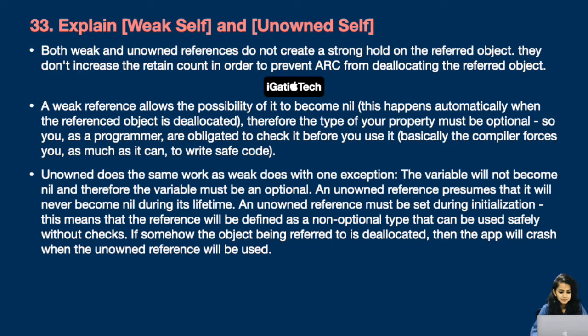Unowned does the same work as weak with one exception: the variable will not become nil, and therefore the variable must be a non-optional type. An unowned reference presumes it will never become nil during its lifetime. An unowned reference must be set during initialization and can be used safely without checks. If somehow the object being referred to is deallocated, the app will crash when the unowned reference is used.